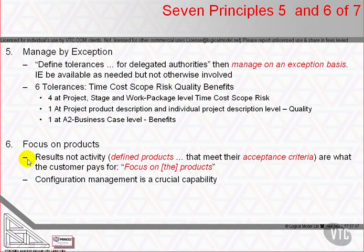A set of products to be produced is agreed before activity to create them starts. The project's products define the project's scope and dictate the activities to be scheduled and budgeted, tracked and reported. Each product is defined in a product description that describes the product's purpose, composition, derivation, format, quality criteria, and quality testing methods. The product description's content is therefore a sound basis for estimating effort and resource requirements, and for determining the dependencies and scheduling the activities that create or acquire the products in the project's scope.